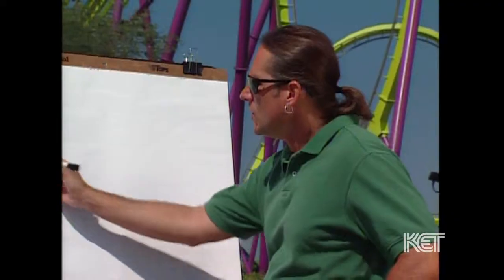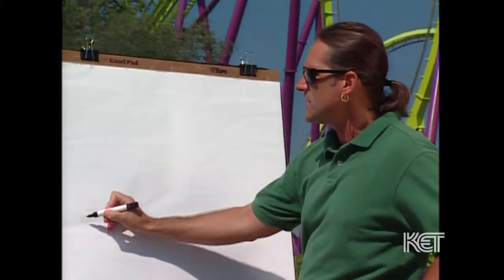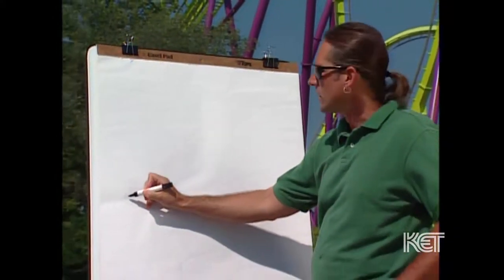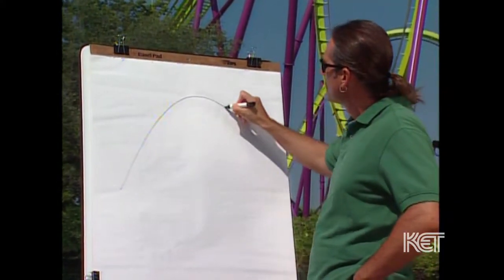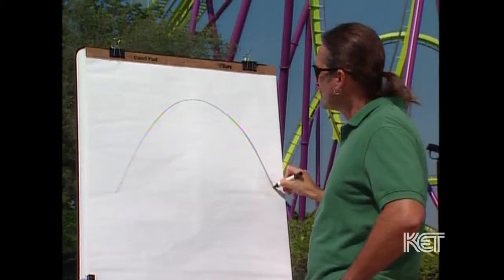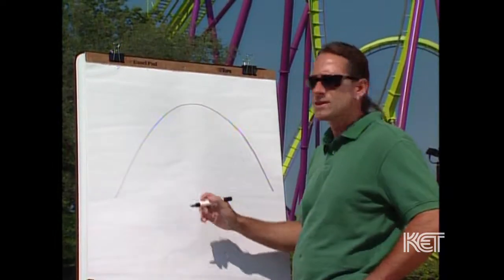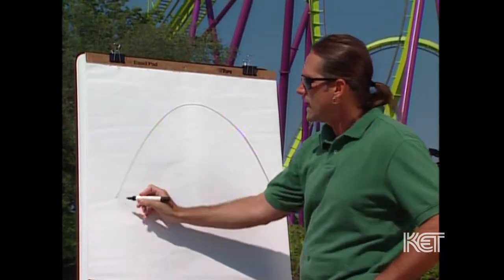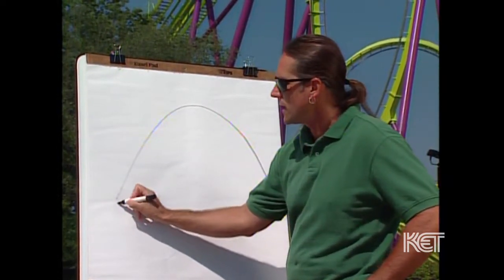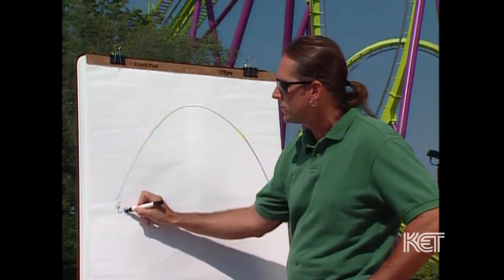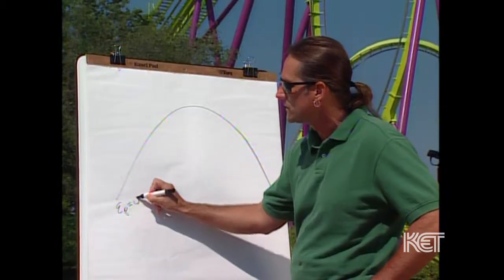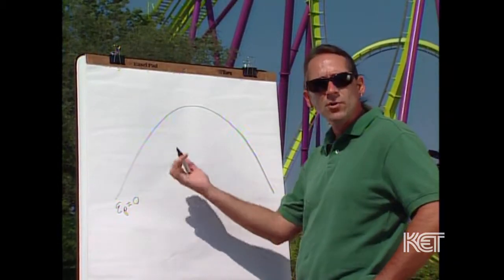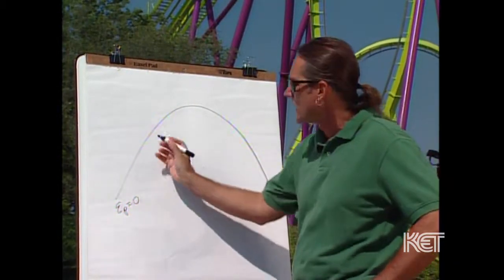To illustrate the idea of work, potential energy, and kinetic energy, we can take a lift hill where we're moving up and then coming down the other side. At the bottom we have zero potential energy, so we're going to do some work on the system. As we work our way up the hill, we are applying a force to an object through a distance.